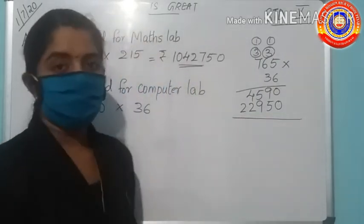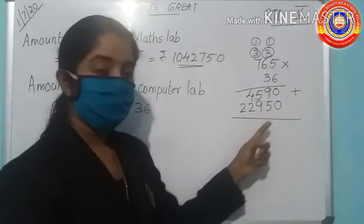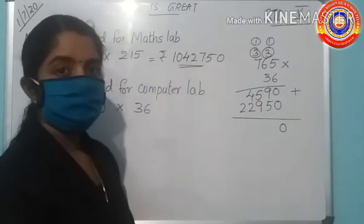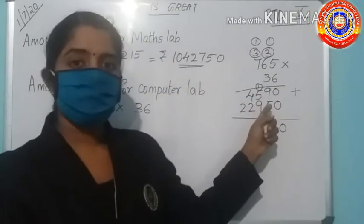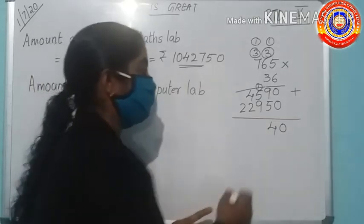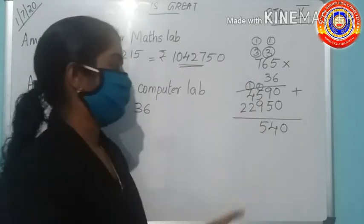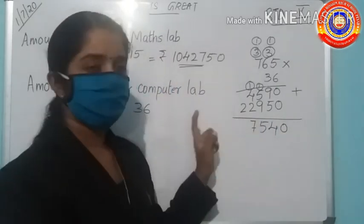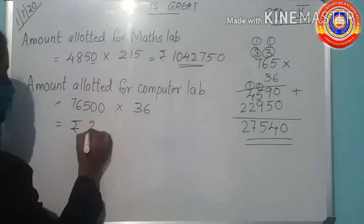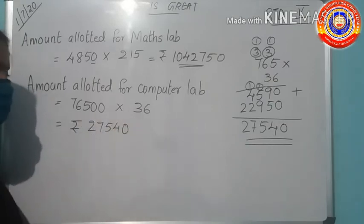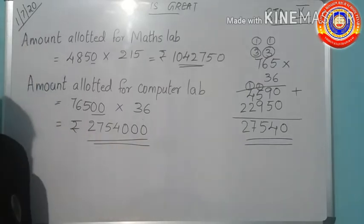What we have to do is to add these numbers. Put the plus sign here. Then add, 0 plus 0 is 0. Then 9 plus 5 is 14, write 4 here, carry over 1. Then 1 plus 5 is 6, 6 plus 9 is 15, write 5 and carry over 1. 1 plus 4 is 5, 5 plus 2 is 7. Write 2 here. We got the answer. Then add the 2 zeros, 0 and 0. What is the number here? 27,54,000.